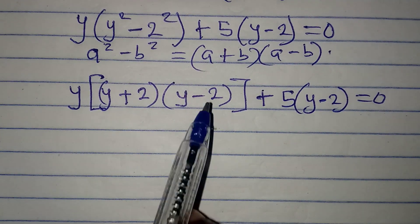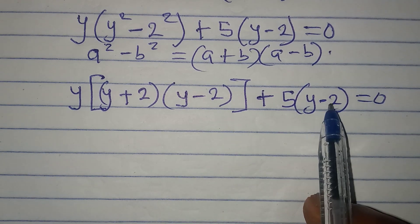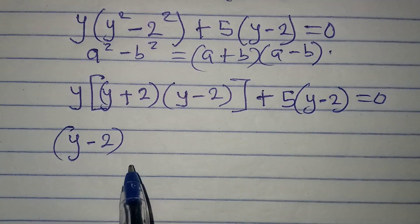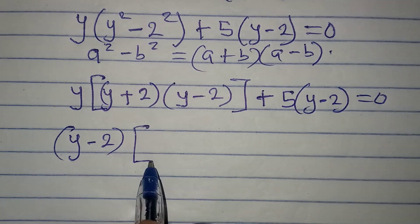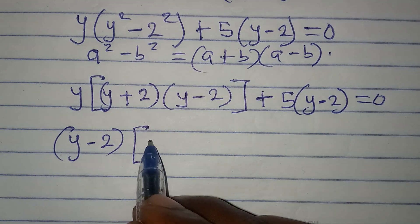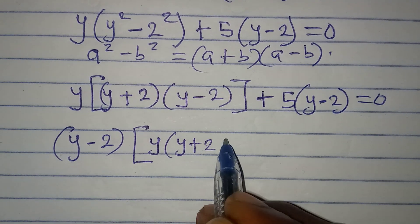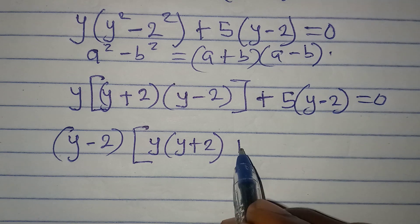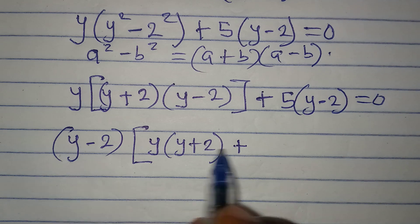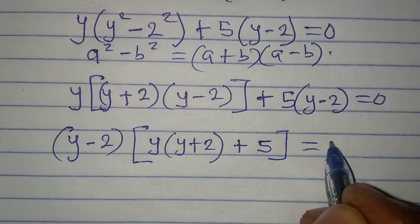Now I have y minus 2 appearing in both terms, so I can factor out y minus 2. That gives bracket y minus 2 times bracket y times bracket y plus 2 plus 5, equals zero.